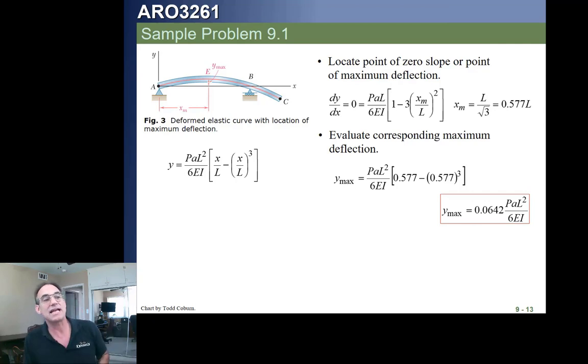To be sure that that's actually the maximum, we would have to do this whole process again for the segment of beam from B to C, and find out if that deflection is more or less. It could be either, depending on the relative geometry.